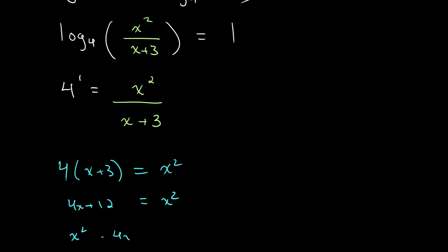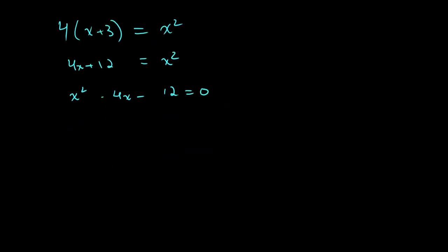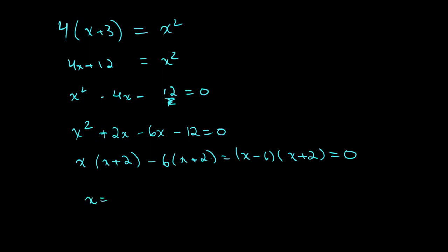So we get x squared minus 4x minus 12 is equal to 0. So we get x squared, then we can factor this. You can factor it however you want. And I prefer to use middle term breaking, so using the factors 6 and 2 of 12. So x squared plus 2x minus 6x minus 12 is equal to 0. So x times x plus 2 minus 6 times x plus 2 is equal to x minus 6 times x plus 2. And this is equal to 0. So x is equal to 6 or x is equal to minus 2.